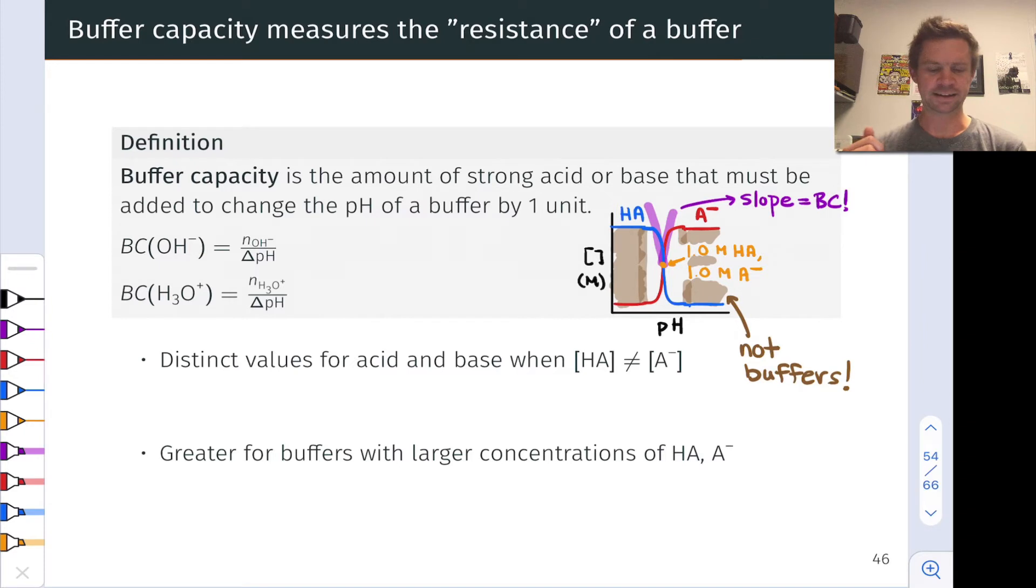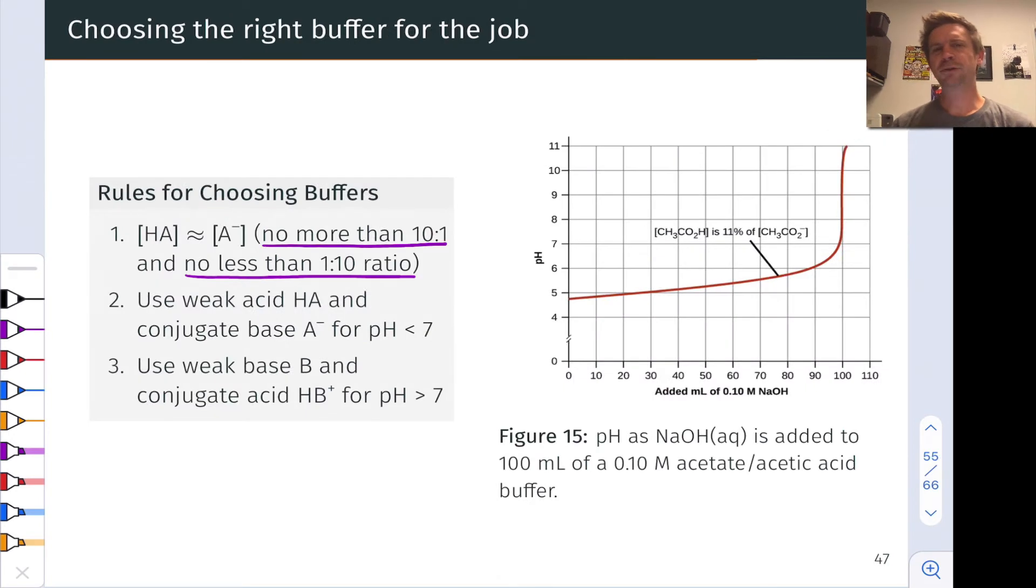We already touched on this idea that there are distinct values for buffer capacity for acid and base when HA and A⁻ are not equal to each other. And generally speaking, greater concentration means a greater buffer capacity. For example, a buffer with 2 molar HA and A⁻ has better buffer capacity than a buffer with only 1 molar of the weak acid and its conjugate base.